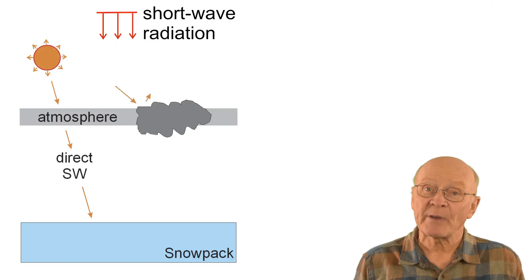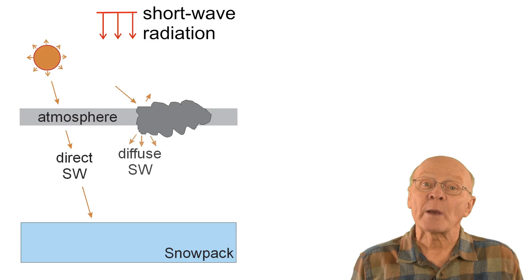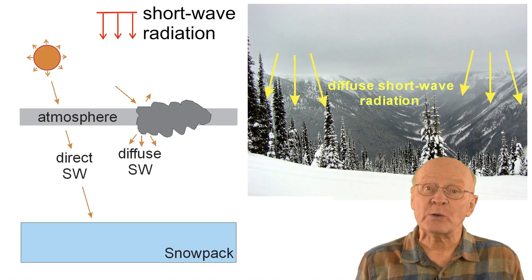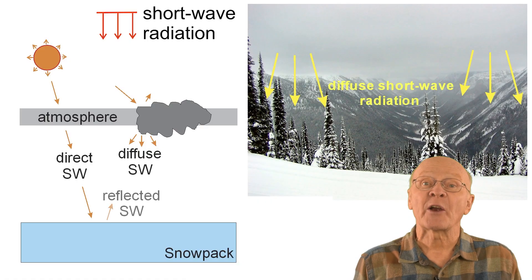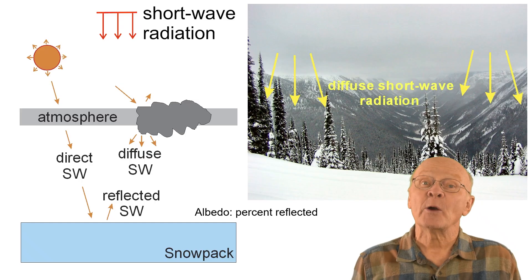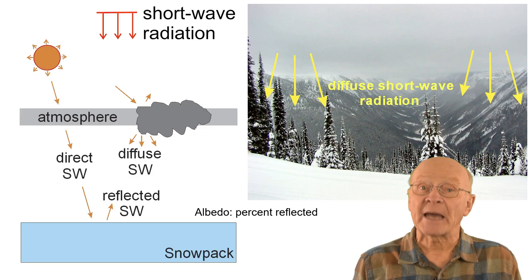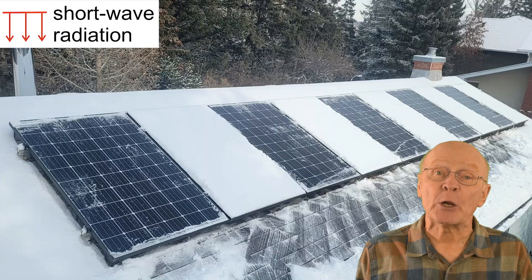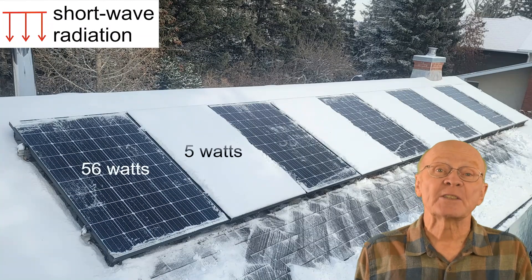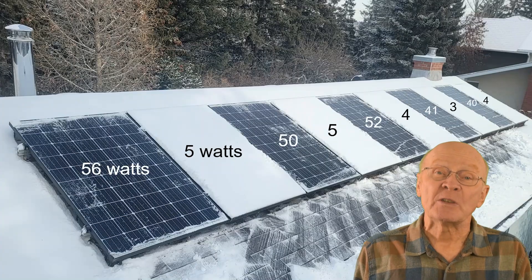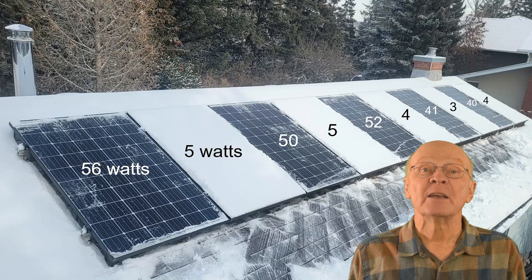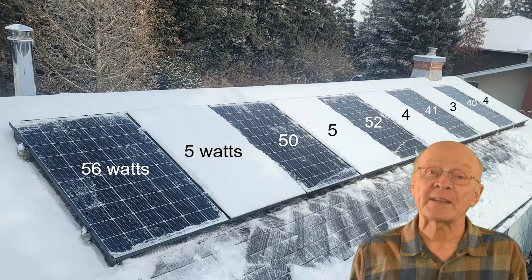Some shortwave radiation from the sun reflects off clouds. The shortwave radiation that passes through clouds is diffuse — either there are no shadows or the shadows are indistinct. Again, about 90% of the downward shortwave radiation is reflected, but compared to under a clear sky, there is less of it to be reflected. As an example of albedo, solar panels with no snow were receiving an average of 48 watts, whereas panels with a few centimeters of snow were receiving an average of 4 watts. Most of the 91% reduction in solar radiation was due to shortwave radiation reflecting off the snow surface.